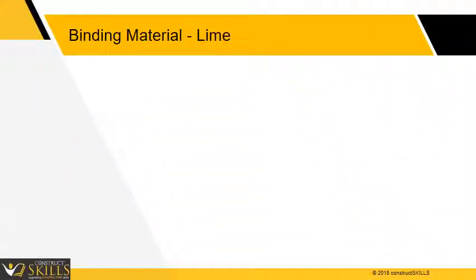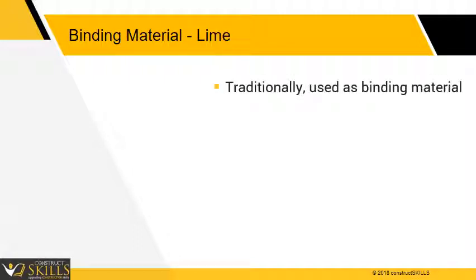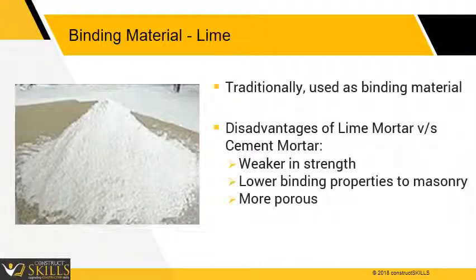Another important constituent of mortar can be lime. Lime was traditionally used as a binding material in lieu of Portland cement. Lime mortar, when compared to cement mortar, is not that strong, has weaker binding properties, and is more porous.